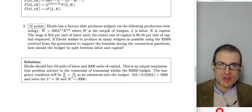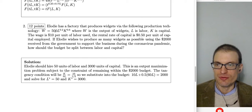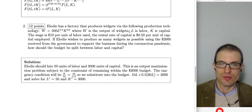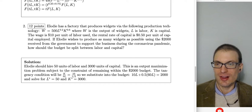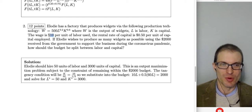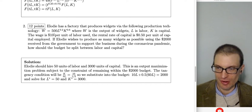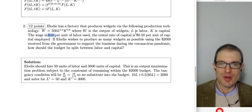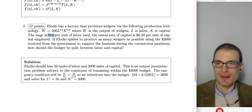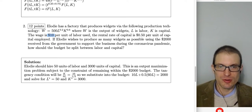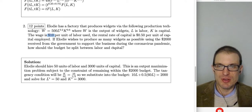Question two: Alodi has a factory producing widgets using W = 500L^0.2 K^0.6, where W is widgets, L is labor, and K is capital. The wage is $10 per unit of labor, and the rental rate of capital is $0.50 per unit. Alodi wants to produce as many widgets as possible using the $2,000 received from the government. How should the budget be split between labor and capital?